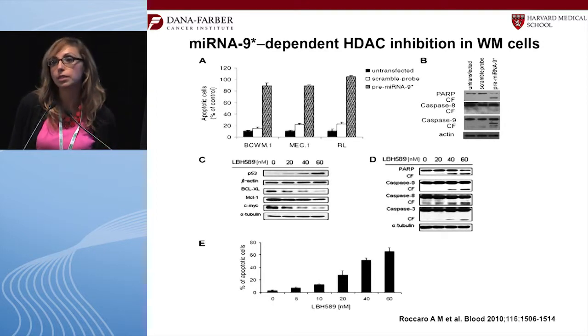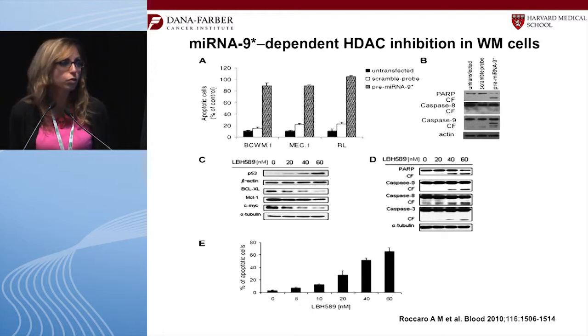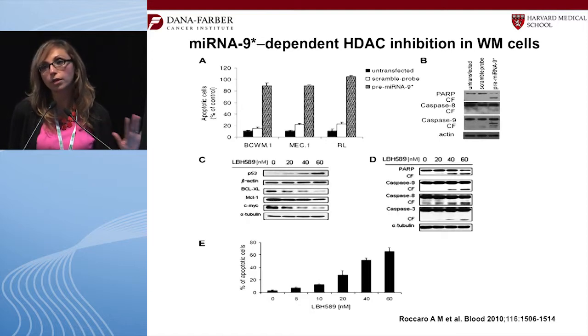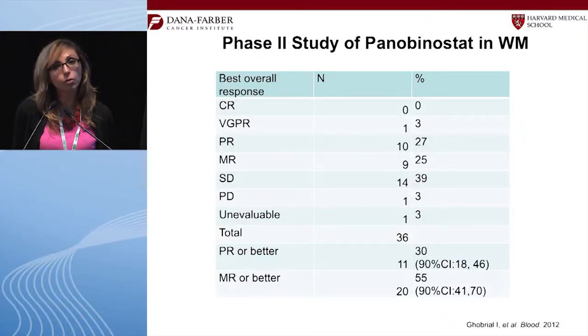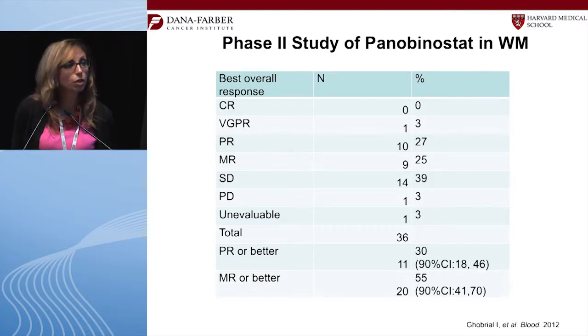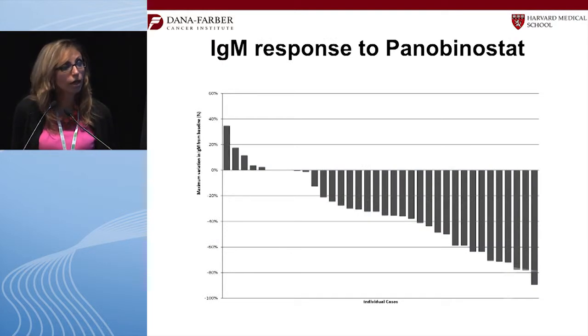With oral regimens like oprozomib we hope to see the same efficacy with less toxicity. Regarding HDAC inhibitors: preclinical studies show epigenetic regulation is very important in Waldenström, with HDAC upregulation and HAT downregulation. Using the HDAC inhibitor panobinostat (LBH589) from Novartis in an oral, relapsed/refractory clinical trial, we found about a 50% response rate, including approximately 30% with partial response or better, and significant IgM decreases in the peripheral blood.